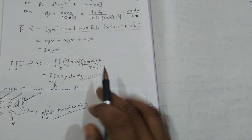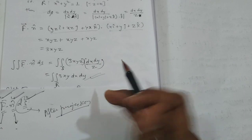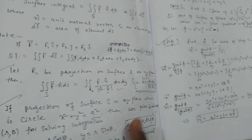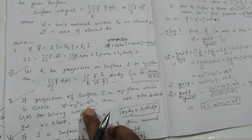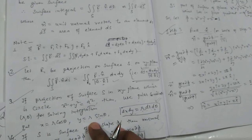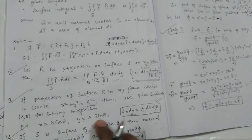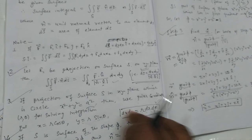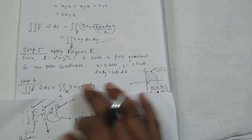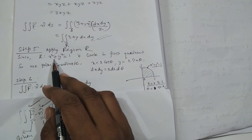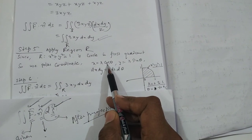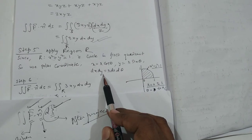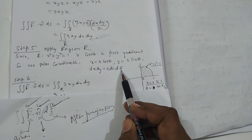As explained in the last video, since the projection on the xy-plane is a circle (unit circle x² + y² = 1), we convert to polar coordinates: x = r cosθ, y = r sinθ, dx dy = r dr dθ. Substituting, 3xy becomes 3r cosθ · r sinθ = 3r² sinθ cosθ, and dx dy = r dr dθ.